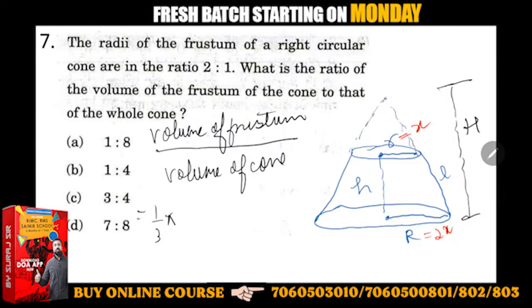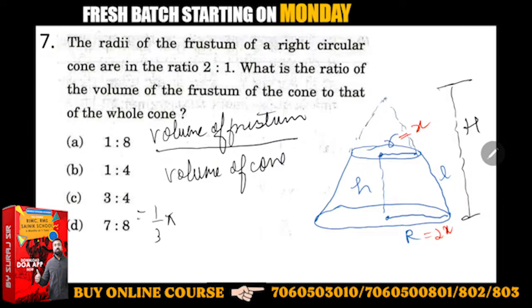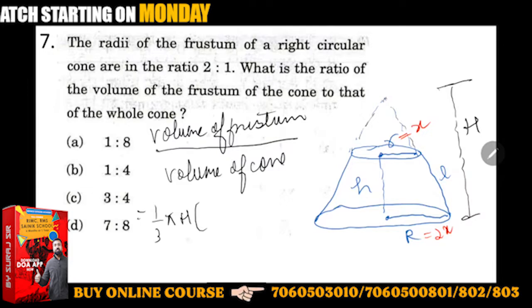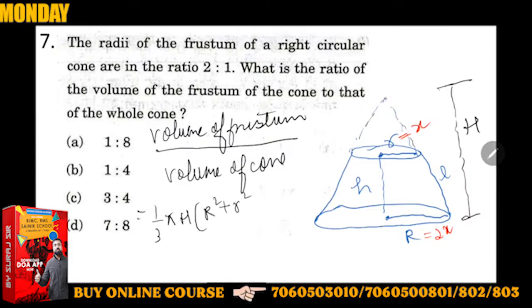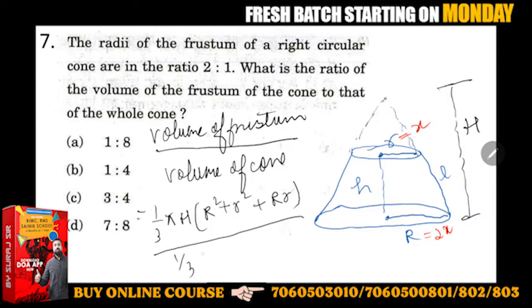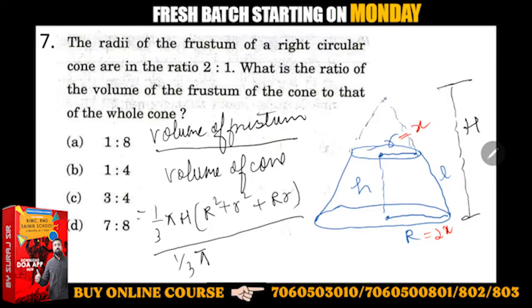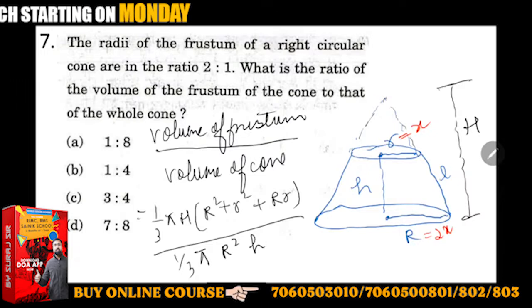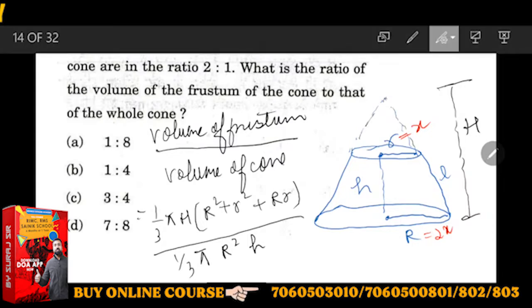Volume of cone is (1/3)πr²H. For the cone, which radius goes? The smaller one goes. So small h will come in frustum's case.